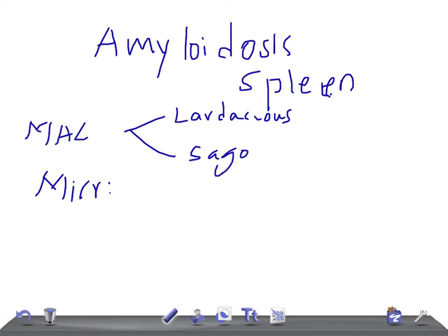In lardaceous spleen, there is deposition in the stroma of the red pulp — the amyloid is deposited in the stroma of the red pulp. In sago spleen, it is deposited in the white pulp — so this one involves the white pulp.